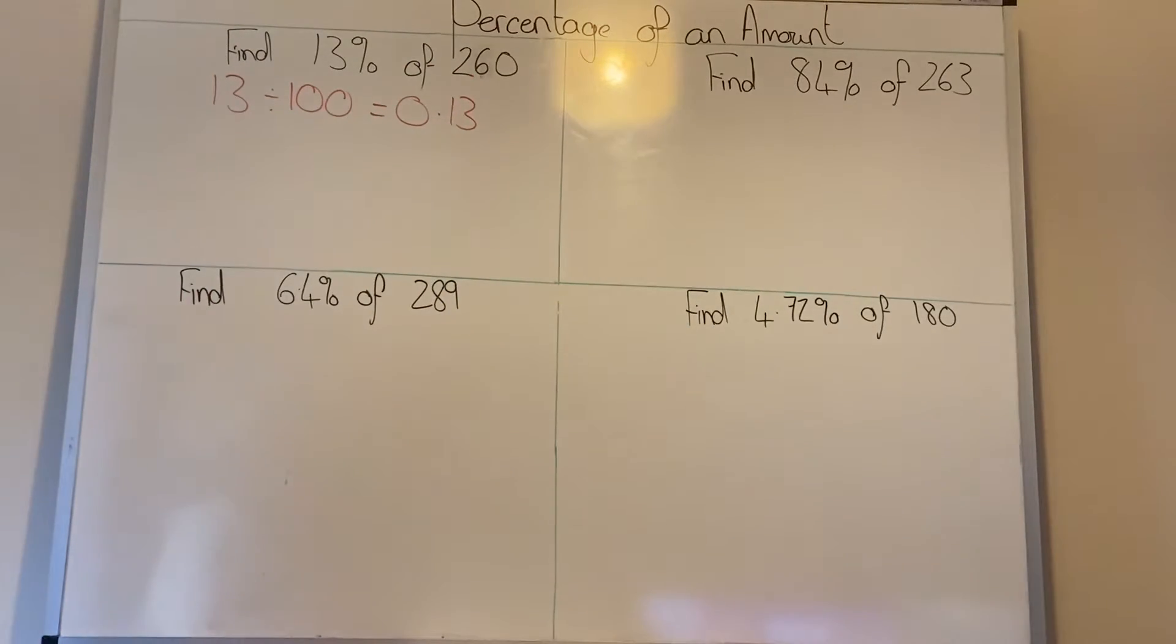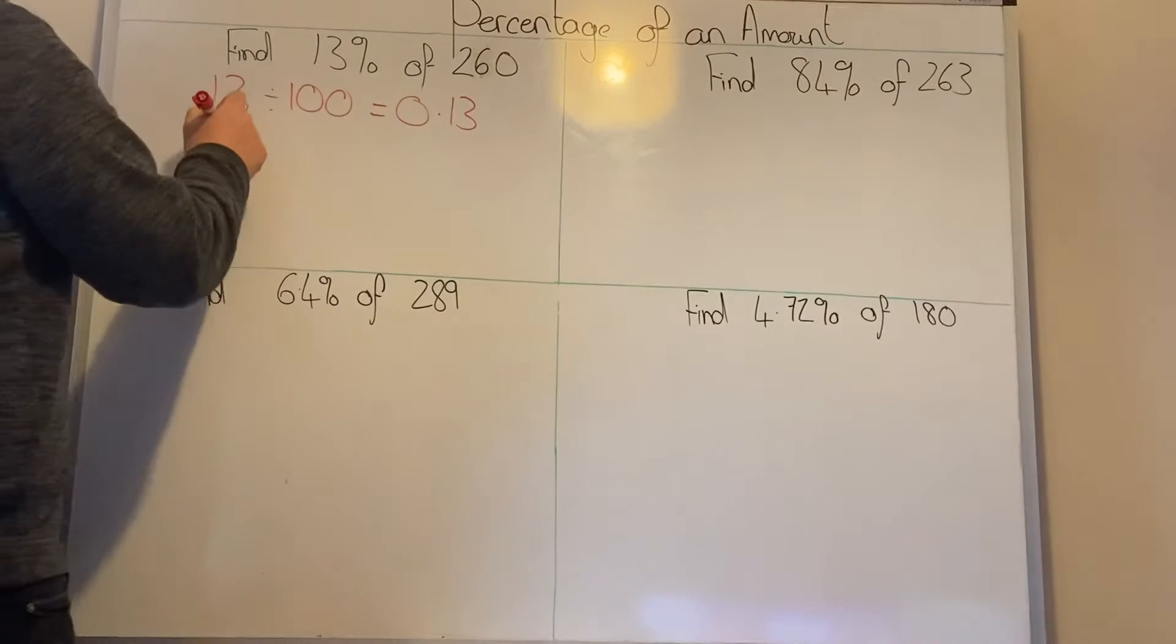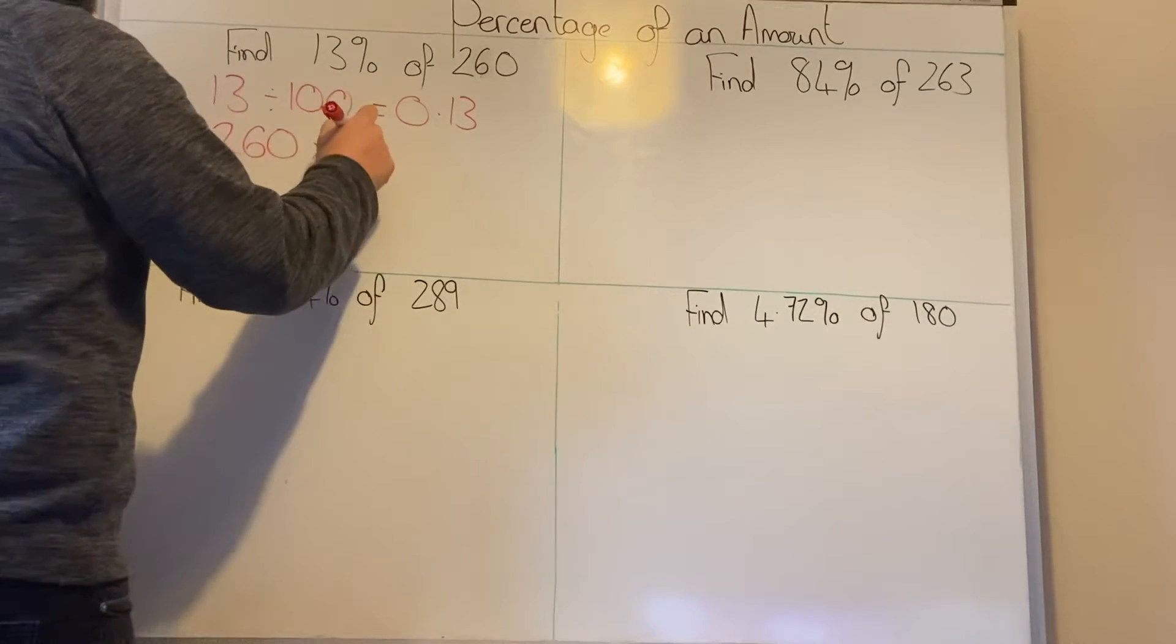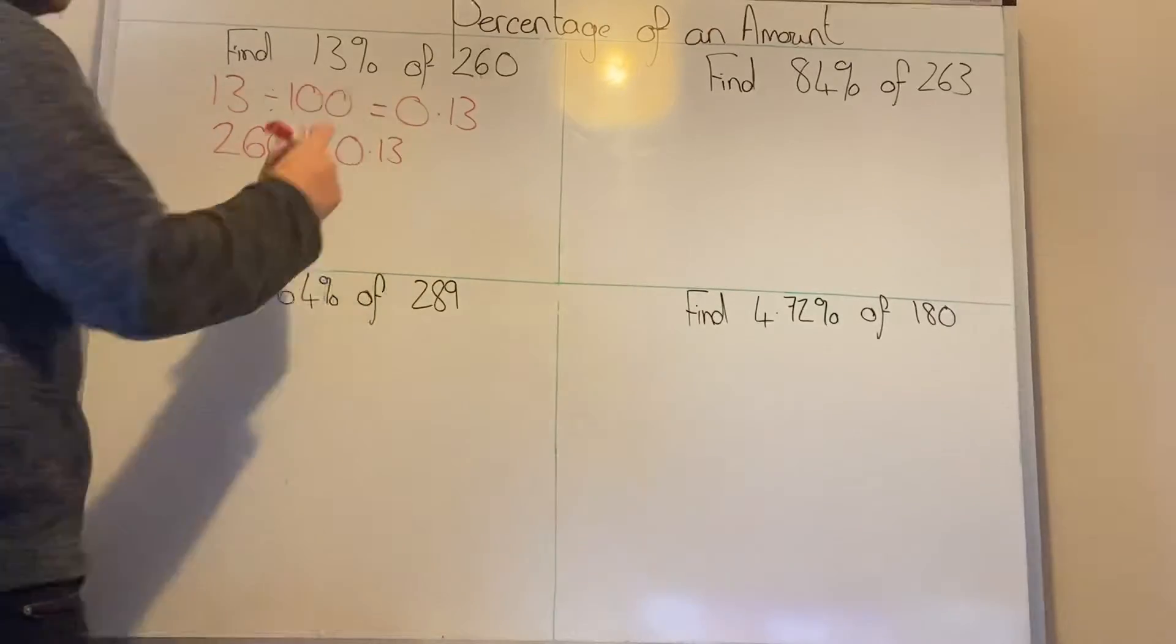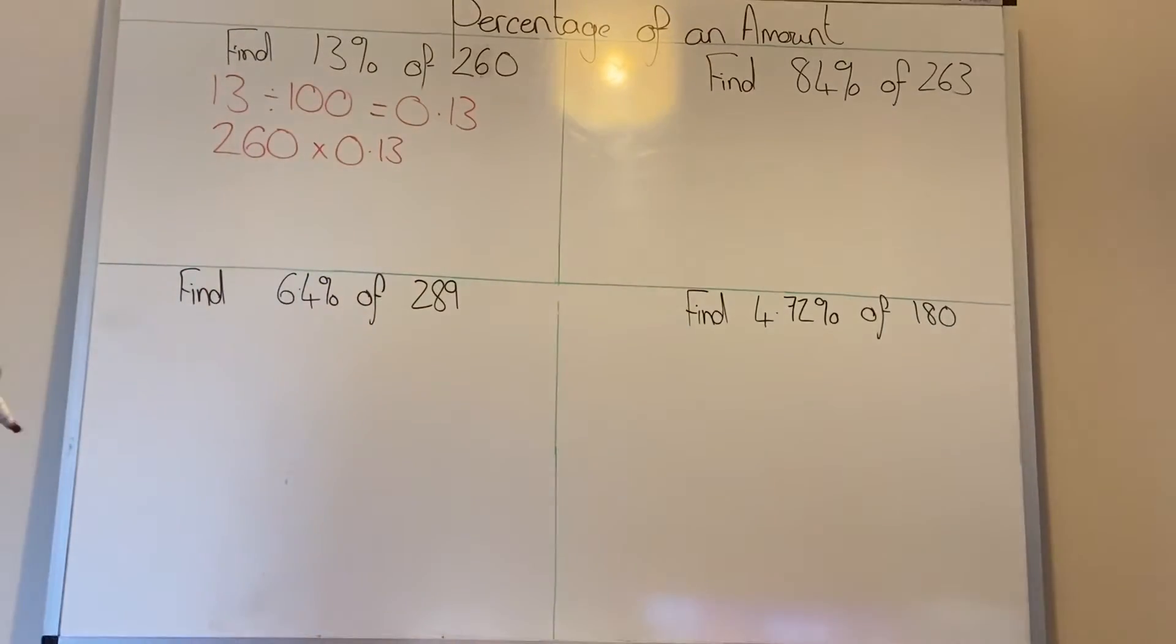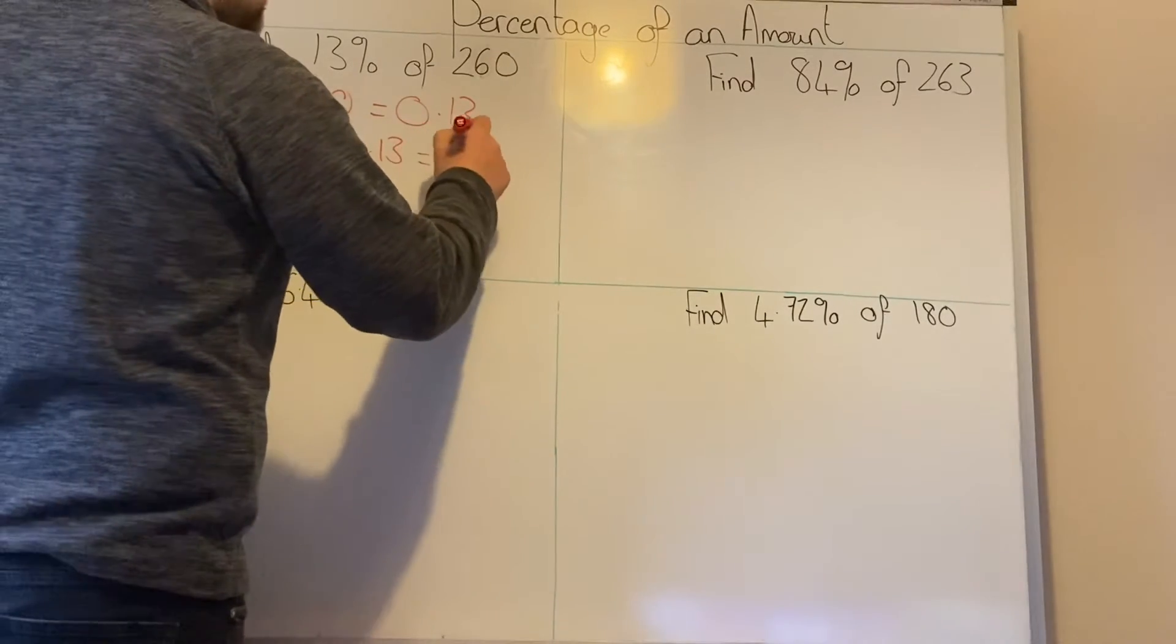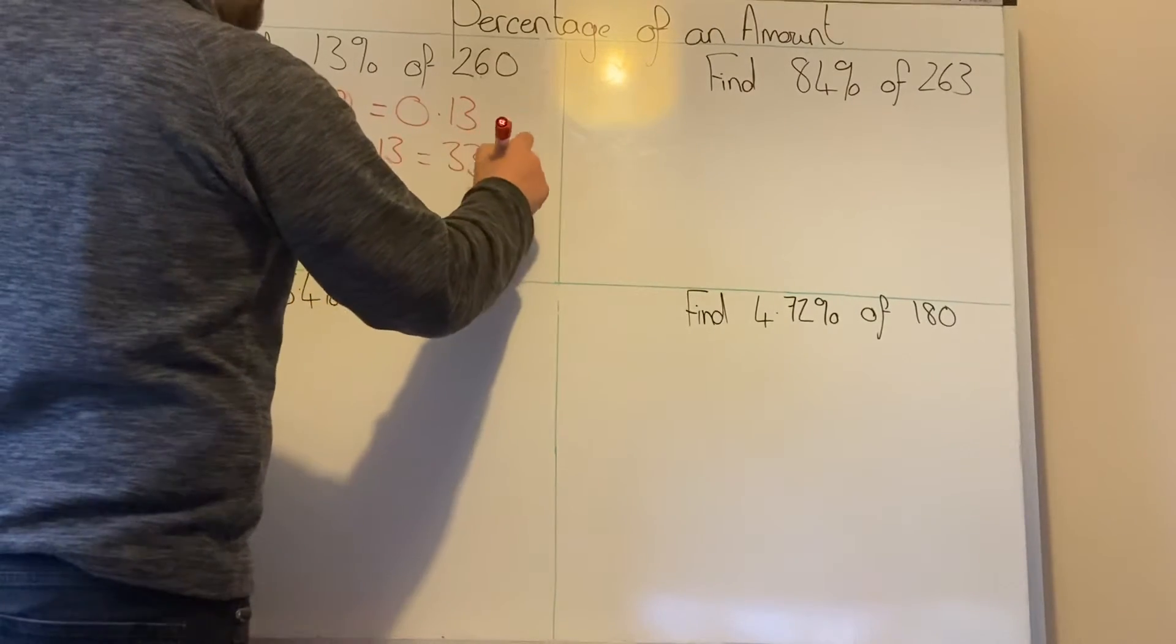With a multiplier we multiply it. So we're going to do 260 times by 0.13. You can do that on your calculator, and the final answer you should get is 33.8.